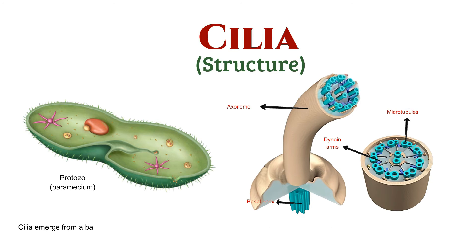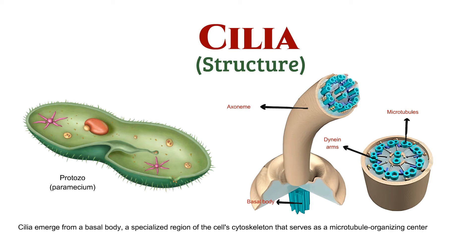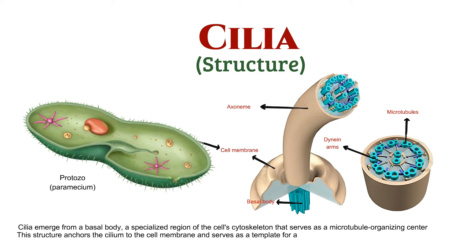Cilia emerge from a basal body, a specialized region of the cell's cytoskeleton that serves as a microtubule organizing center. This structure anchors the cilia to the cell membrane and serves as a template for axoneme formation.